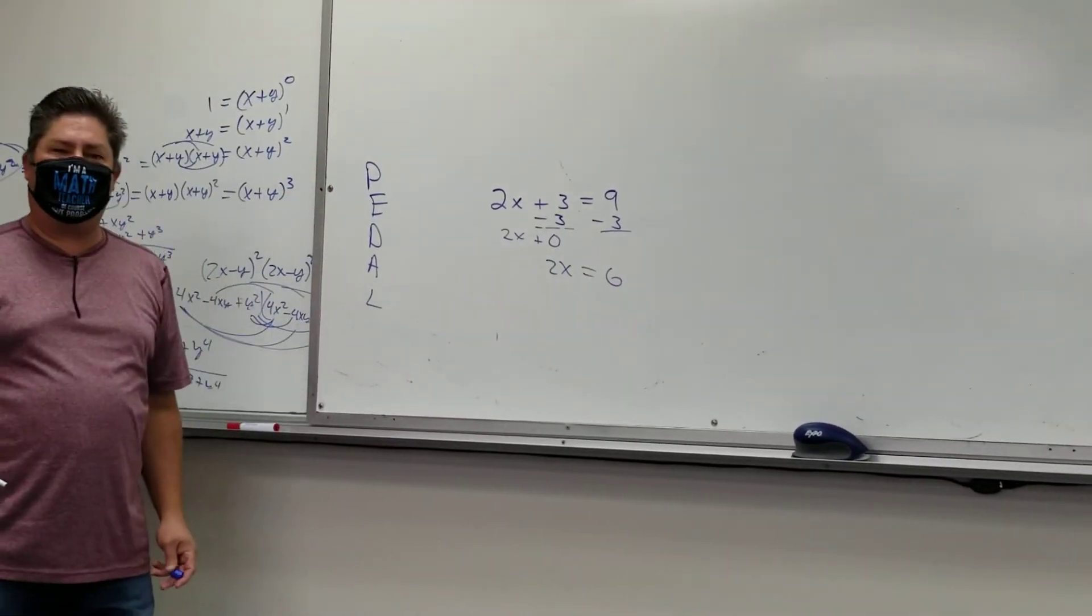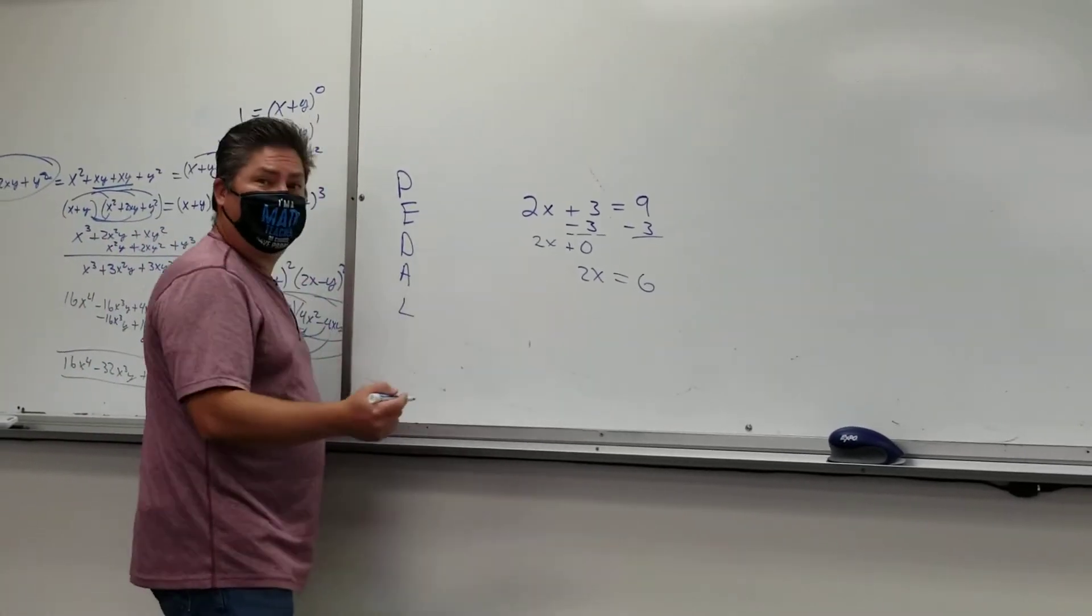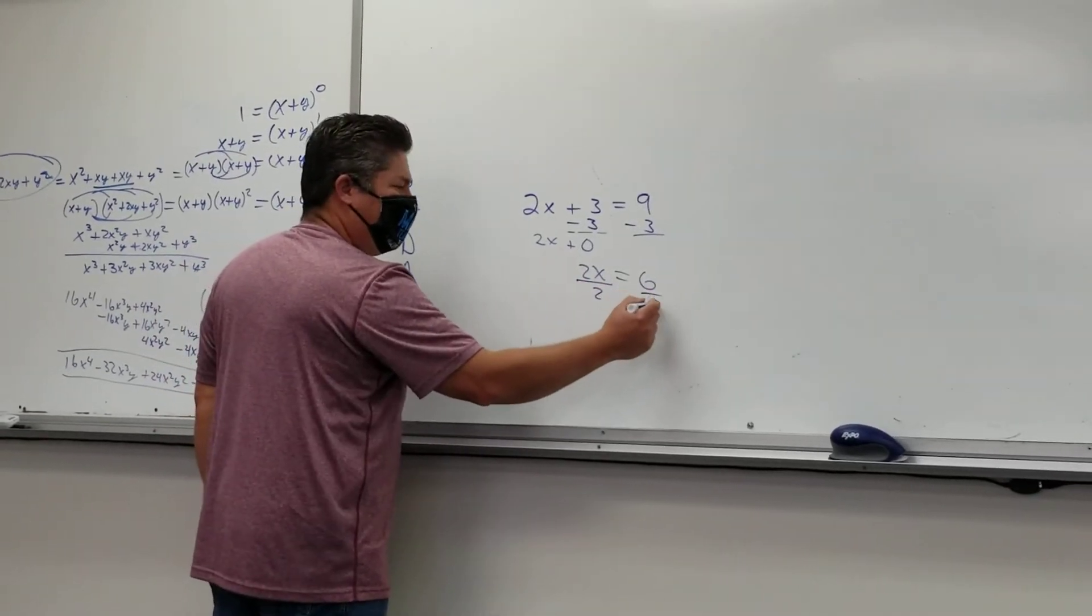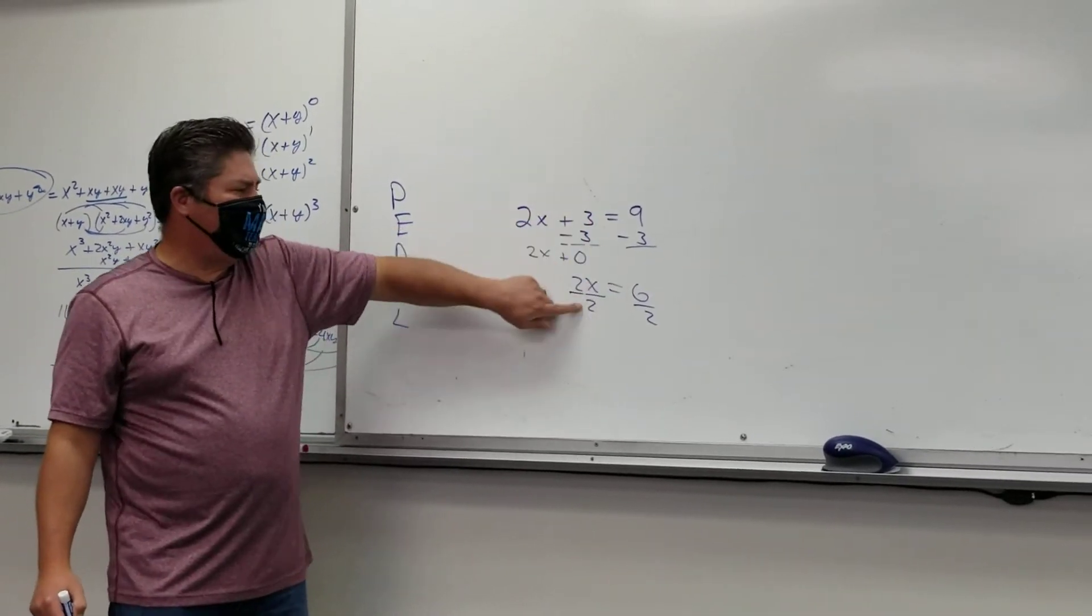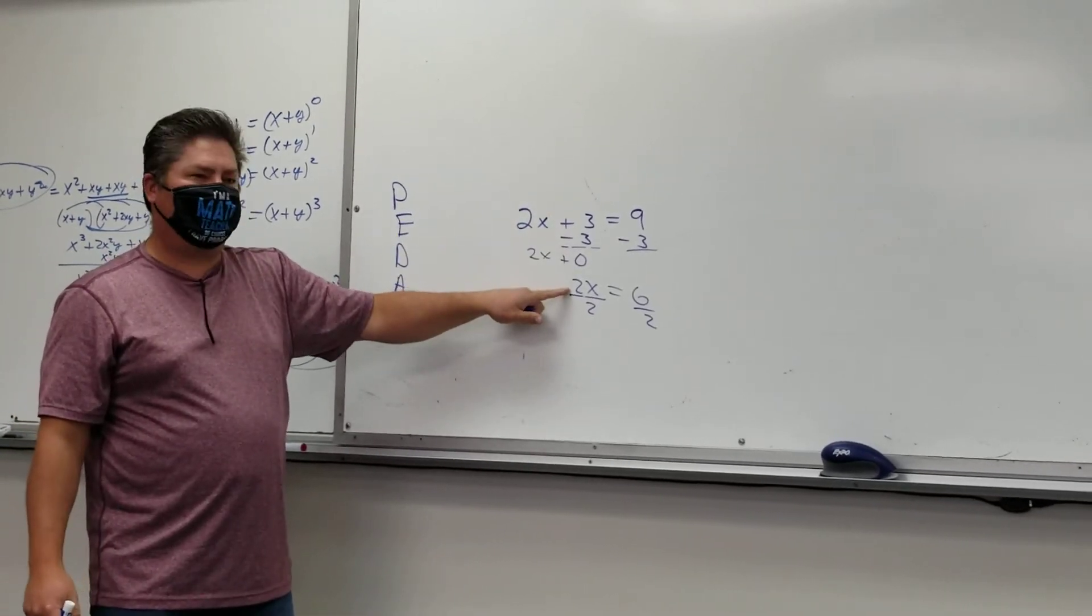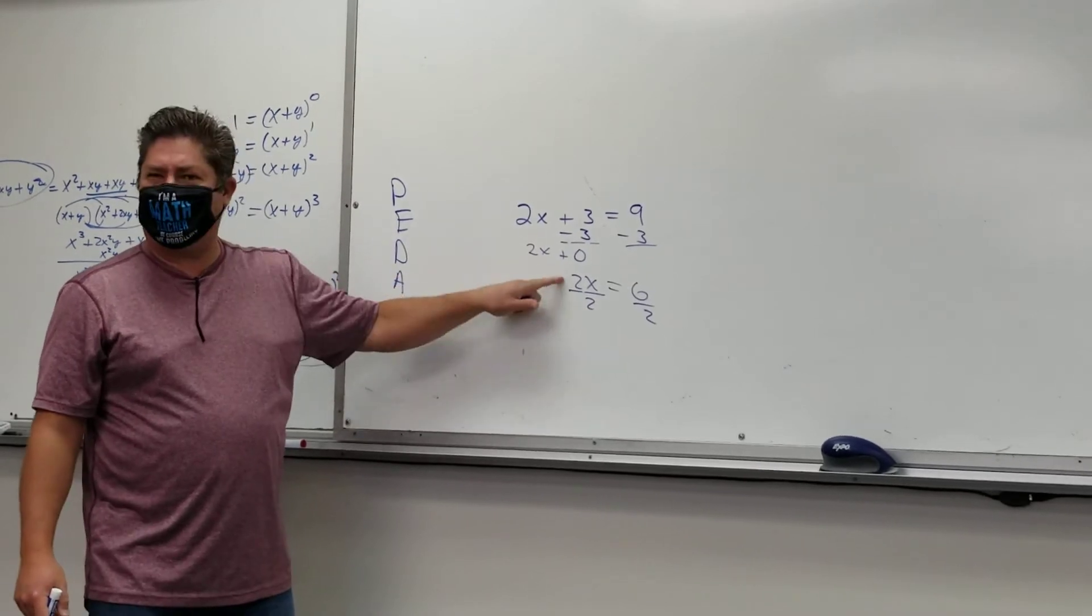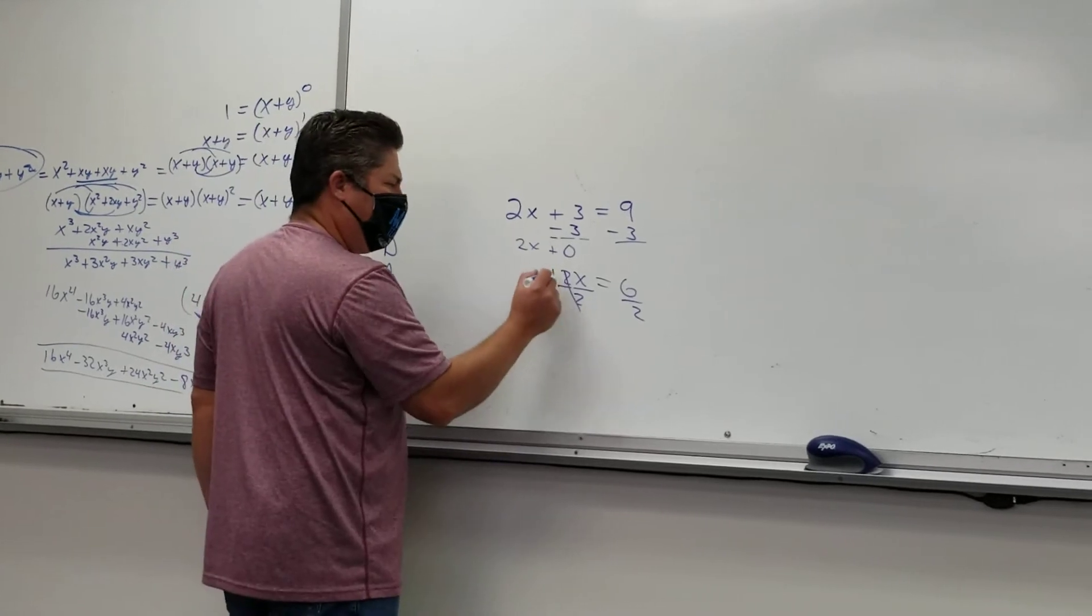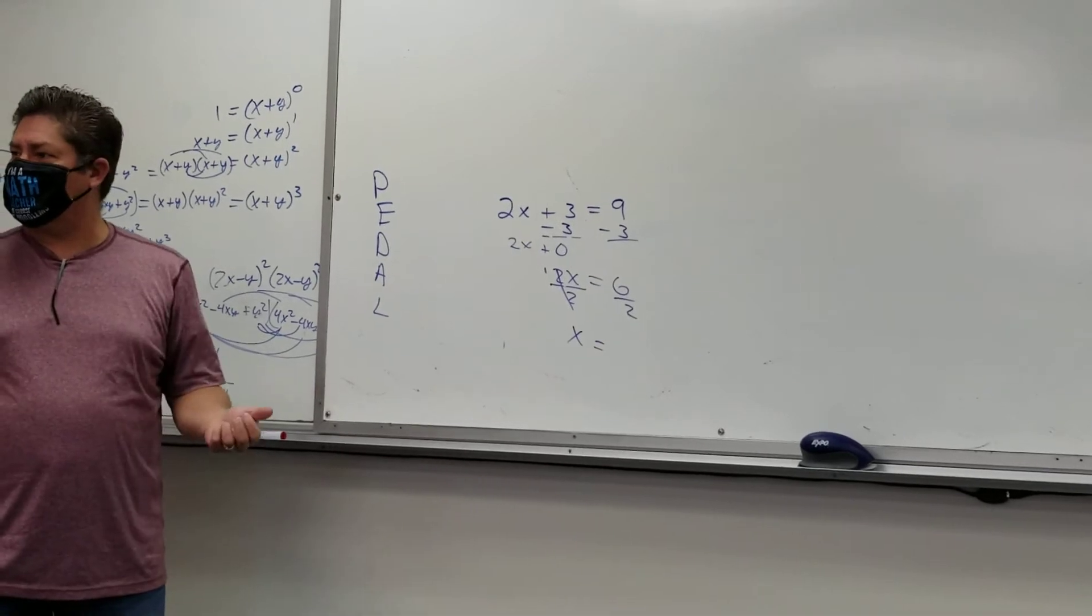And then what should I get rid of next? Going backwards, Danny. It's times. And so I should divide by what? Two. How come I'm dividing? Get rid of the timesing, right? So two is multiplying to X. I've got to divide to get rid of it. Again, it's the opposite. Opposite of addition, subtraction. Opposite of multiplication, division. So what happens when I divide two by two? What's two divided by two? One. What's one times X? Just X, right? One times anything is whatever you started with.